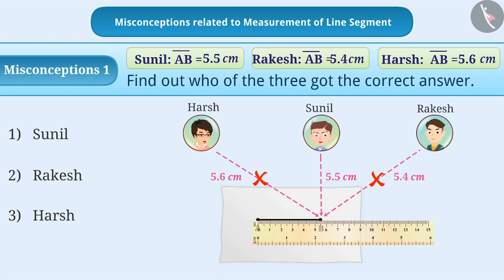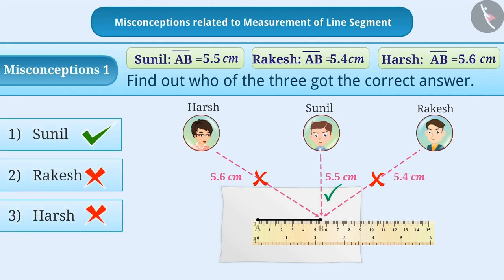Always remember that while measuring any line segment, eye should always be exactly above the mark on the ruler. Therefore, the correct answer of the given question is option 1, whereas option 2 and option 3 are incorrect answers.